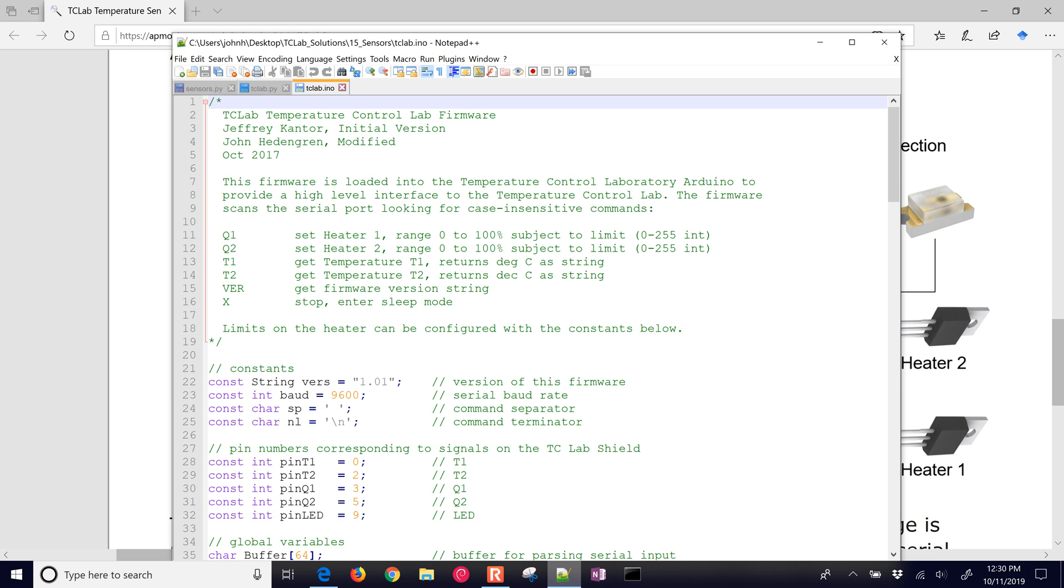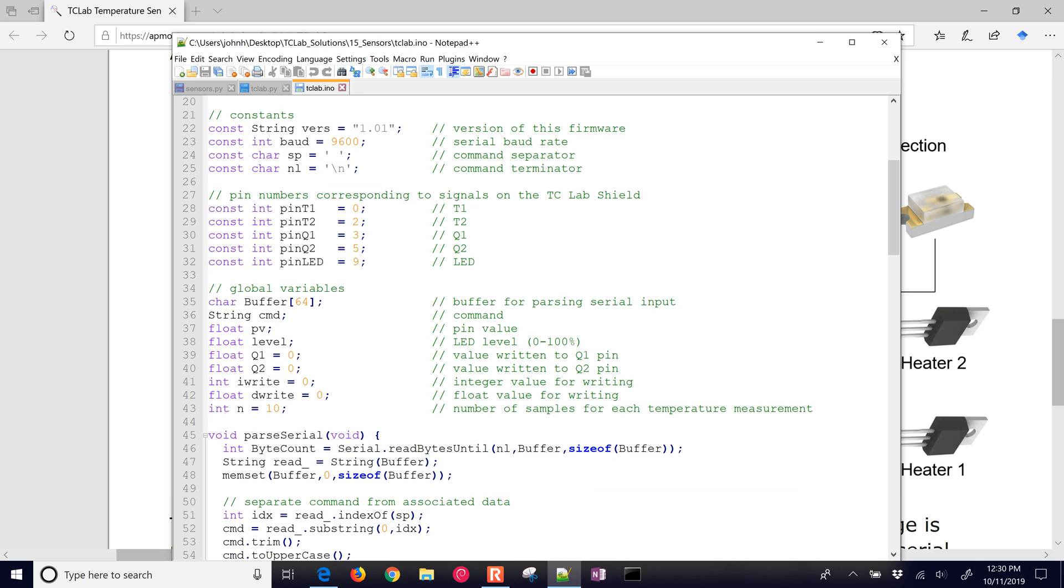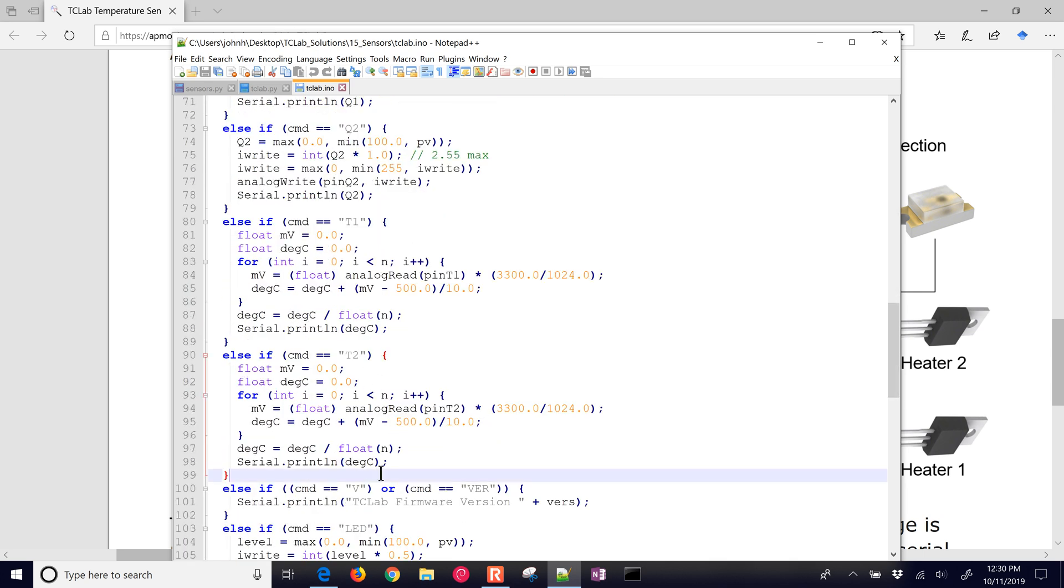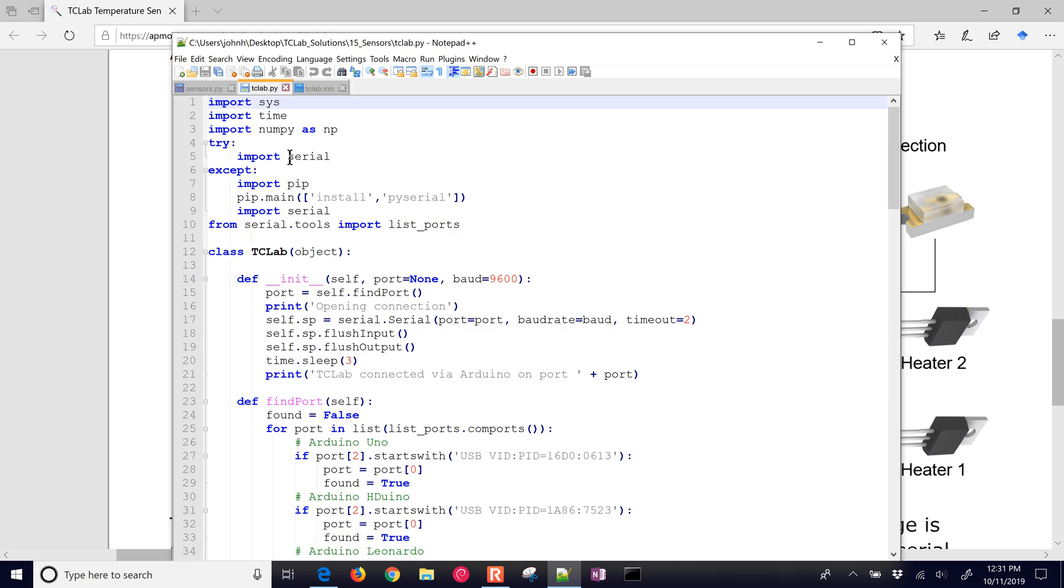Let's take a look at the tclab.ino. This is the firmware that's running on the Arduino. I wanted to show you where the temperature is actually being read. We read the temperature actually 10 times every time you request a T1. It cycles through this for loop, i equals 10, and it's going to read the 0 to 1023. It converts it into millivolts, and then we use that correlation that we just discussed. It sums it up, and at the very end, it divides by 10, and then we send it over the USB serial connection so that Python can read it.